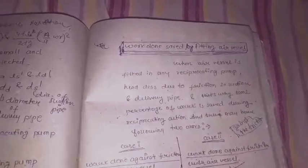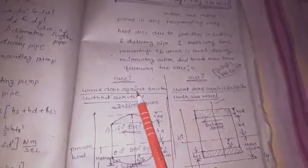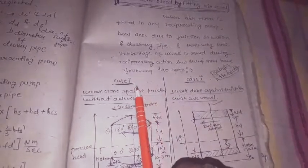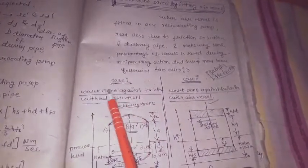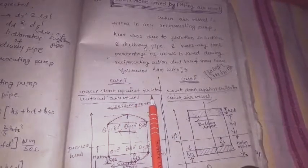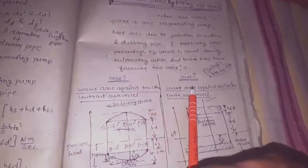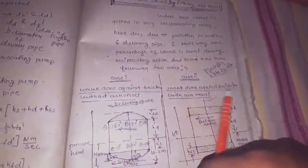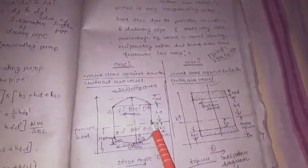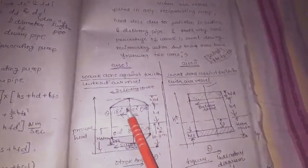There are two cases to consider. Case 1 is when the air vessel is not used. Case 2 is when the air vessel is used. We will analyze what happens in each case regarding head loss due to friction.